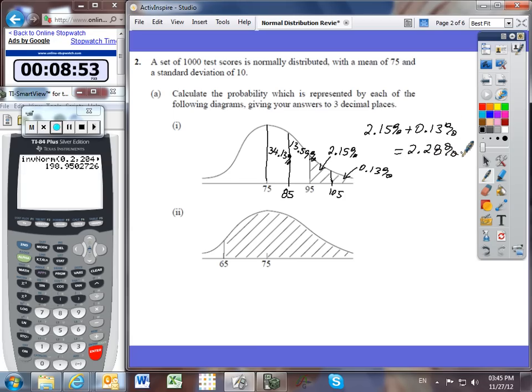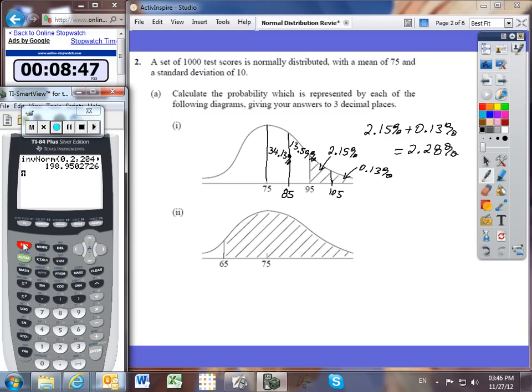Another way you could have done this problem would have been to use your calculator. Because we are looking for a probability, then we will just go straight into normal CDF. And the left bound, the lower cutoff of that shaded region, is 95. The upper bound, or the rightmost point, it keeps going to the right forever, to positive infinity.